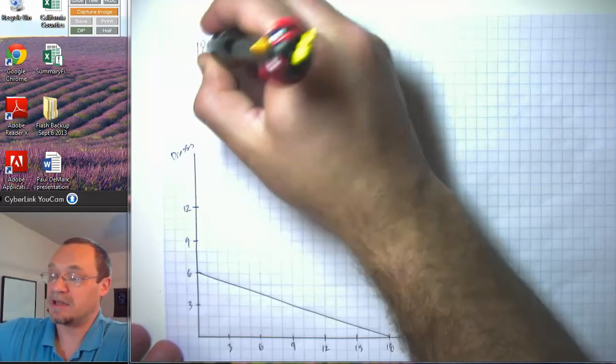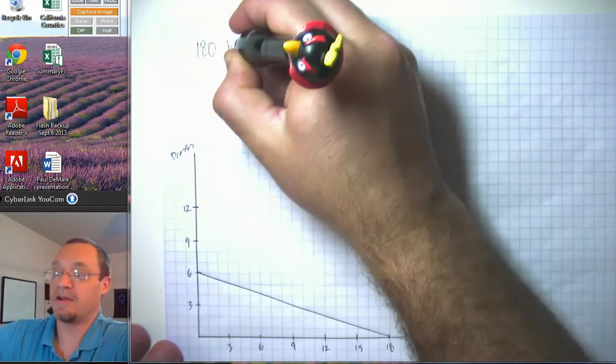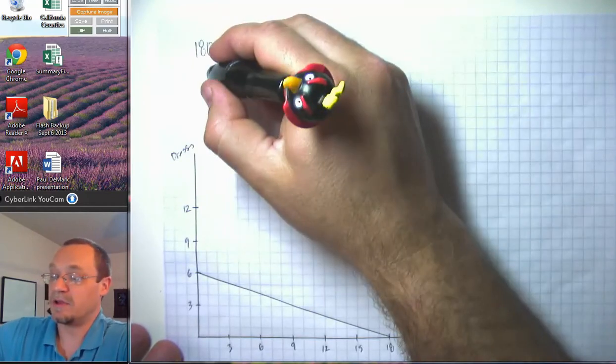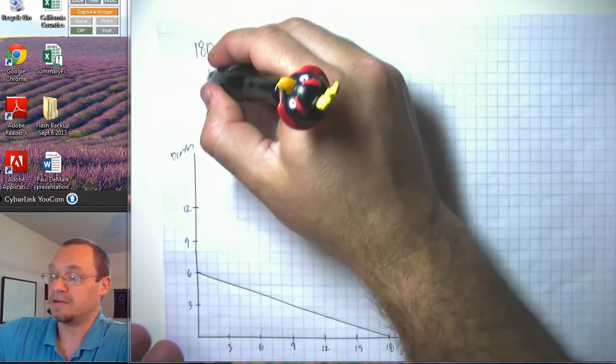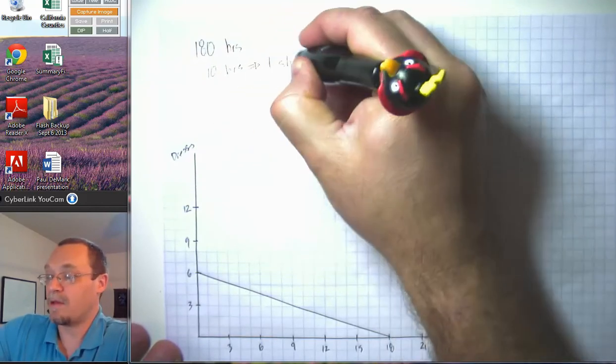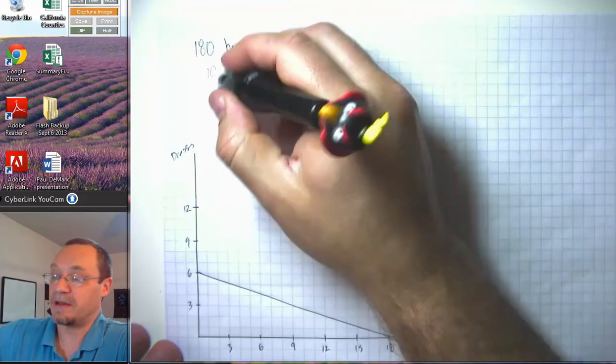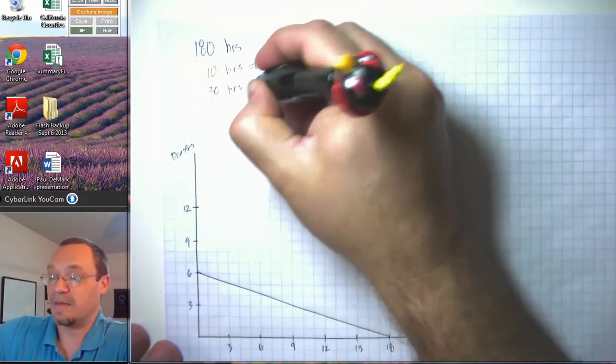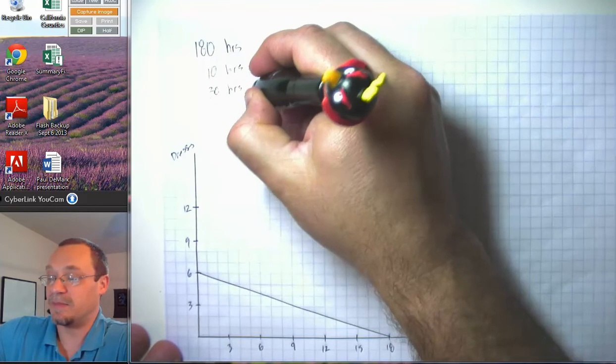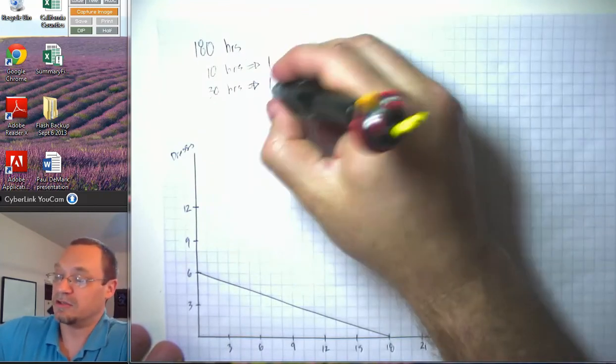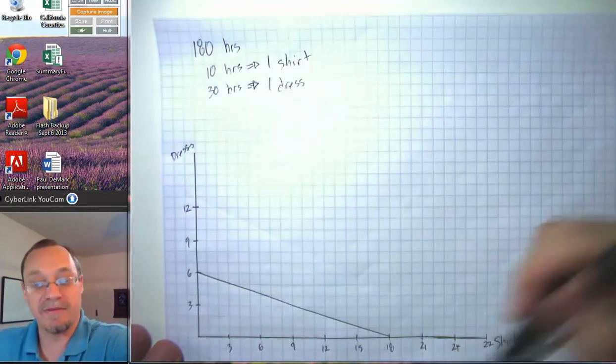So remember in our example, we have 180 hours available and we can use those. Either 10 hours gets us one shirt or we can choose to spend our time here. And notice the way in which we do think about time as a kind of currency. We talk about spending time. 30 hours equals one dress. And we've drawn out the PPF here.